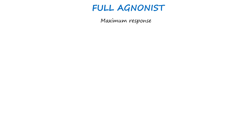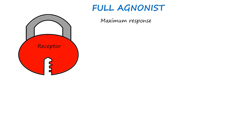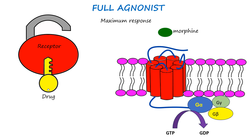A full agonist is a drug that binds to a receptor and activates it to produce the maximum biological response the receptor is capable of — like a key that perfectly fits a lock and fully opens it. When we administer morphine, for example, it acts as a full agonist at the mu opioid receptor in the central nervous system, leading to significant analgesia or pain relief. Morphine is so effective because it fully activates these receptors, mimicking natural pain-relieving peptides but to a much greater extent.